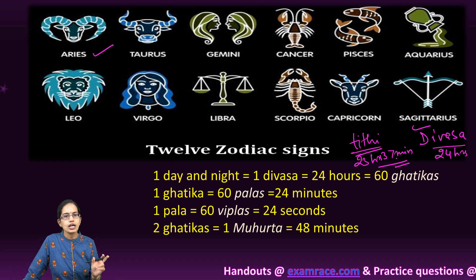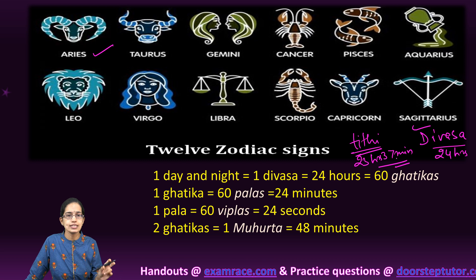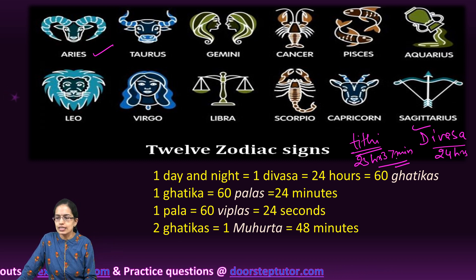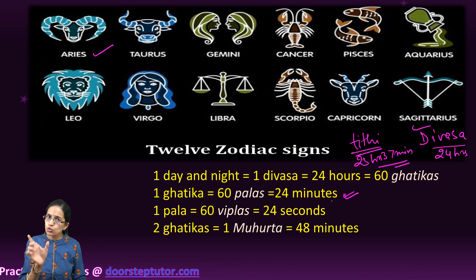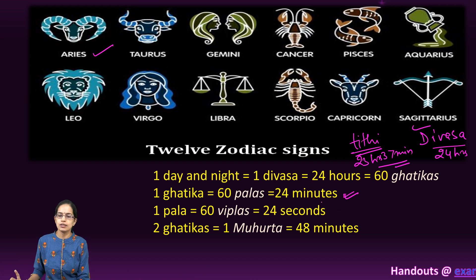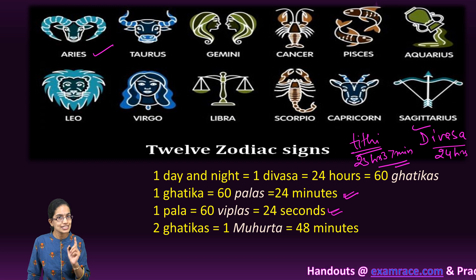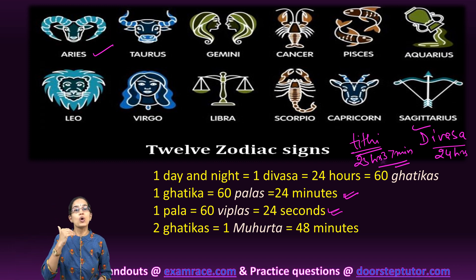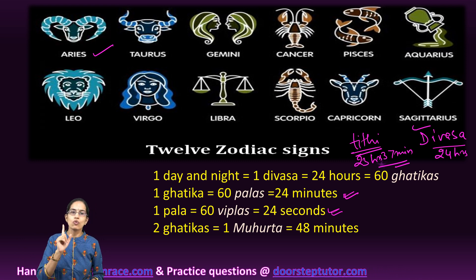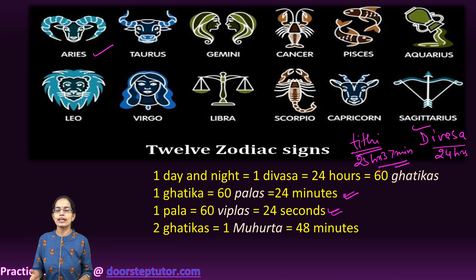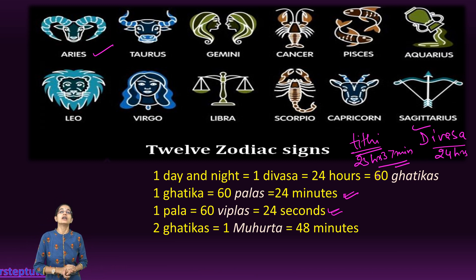One day and night (24 hours) equals 60 Ghatikas, so one Ghatika is 24 minutes. Each Ghatika contains 60 Pals, making one Pal equal to 24 seconds. Each Pal is further subdivided into 60 Vipals, so one Vipal is one-sixtieth of a Pal.